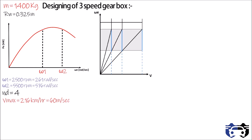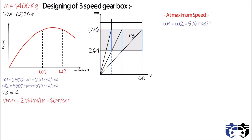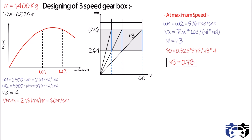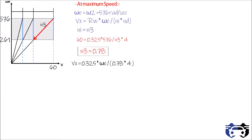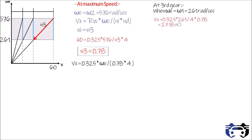The curve will show a range of 261 to 576 rad/s, and at top gear — third gear — we have the maximum speed of 60 m/s. So at maximum speed, omega e equals omega 2 equals 576 rad/s. We know vx equals rw times omega e divided by ni times nd. At third gear, ni equals n3, and after solving we get n3 equals 0.78. This equation is valid while we are in third gear. By decreasing omega e and sweeping down over the working range, the car speed reduces until at omega 1 equals 261 rad/s, the vehicle speed is vx equals 27.18 m/s.